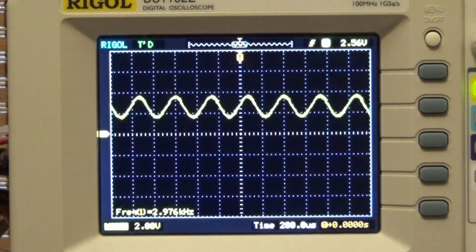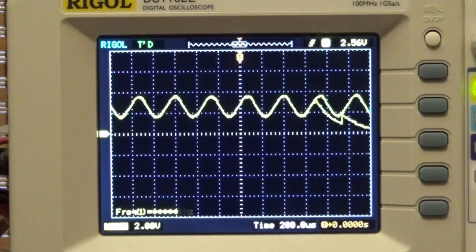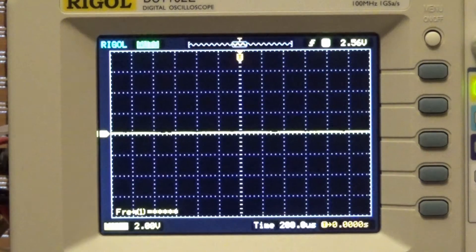So that would explain why the output voltage has decreased. Now I could try to change the cutoff frequency of that filter by changing the resistor which I'll do now and what I'll do is I'll change the 12k resistor to a 1.2k ohm resistor.